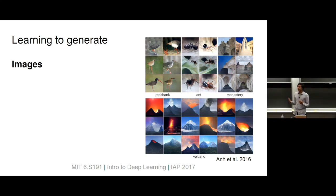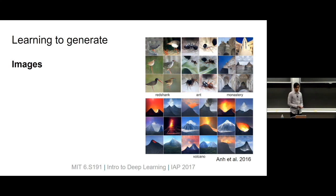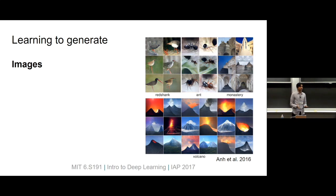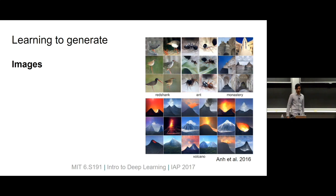Now I want to look at the inverse problem: how can we get neural networks to output things that are really complicated — how can we get them to run backwards, so to speak, and generate images? This is the target we're building towards: a state-of-the-art generative model able to generate a wide diversity of pictures within each class and a wide variety of classes from the ImageNet dataset. The generations end up being quite varied and quite true to form — birds, ants, monasteries, and volcanoes.